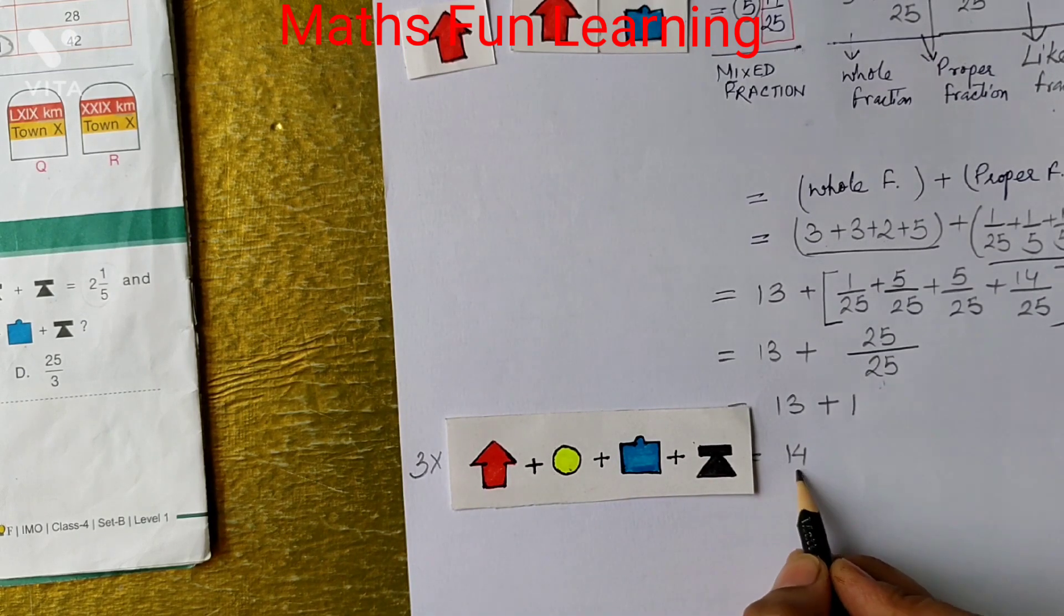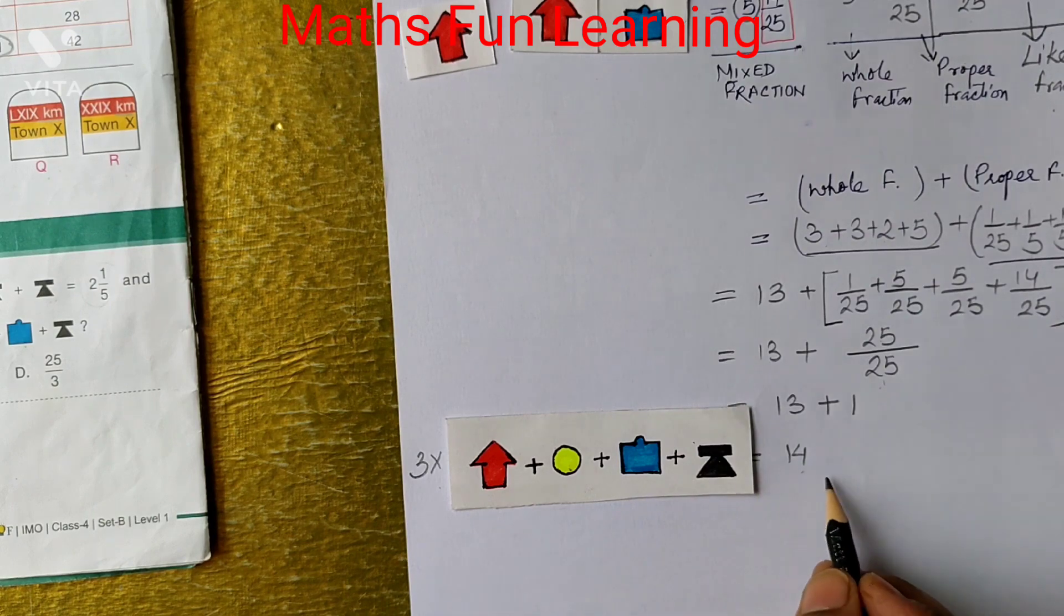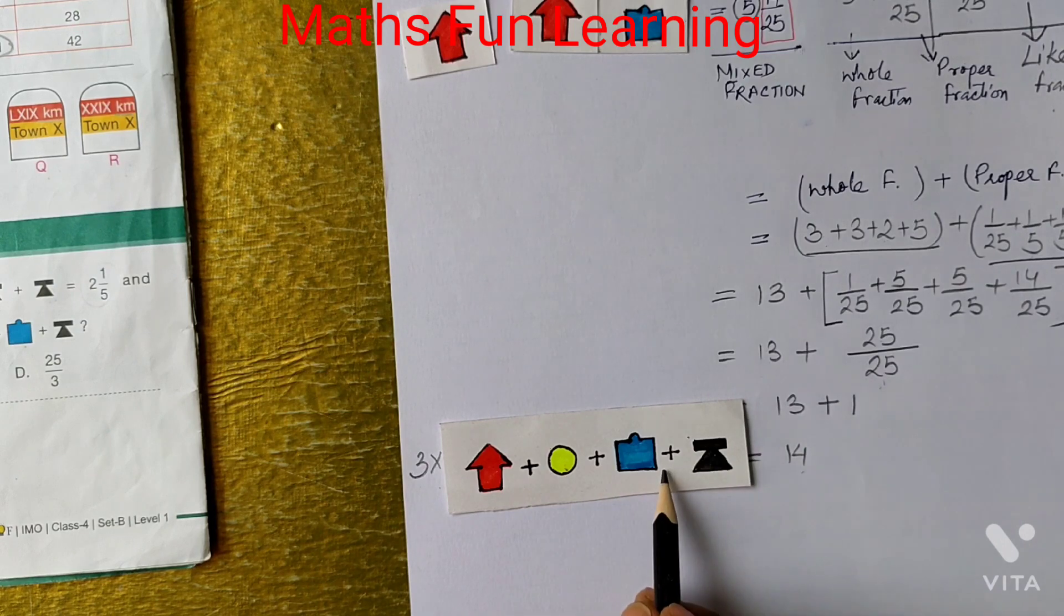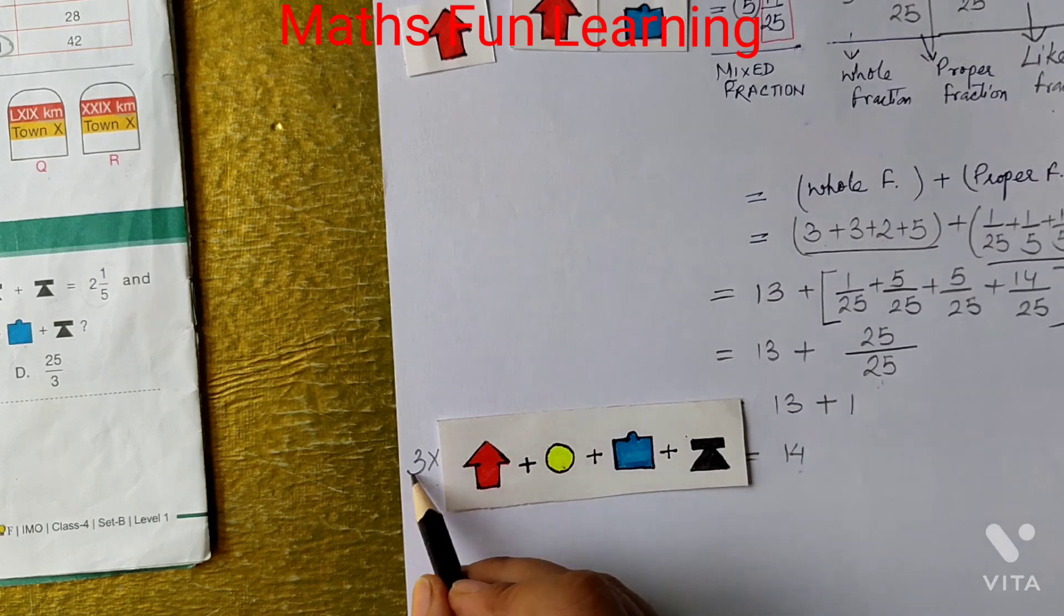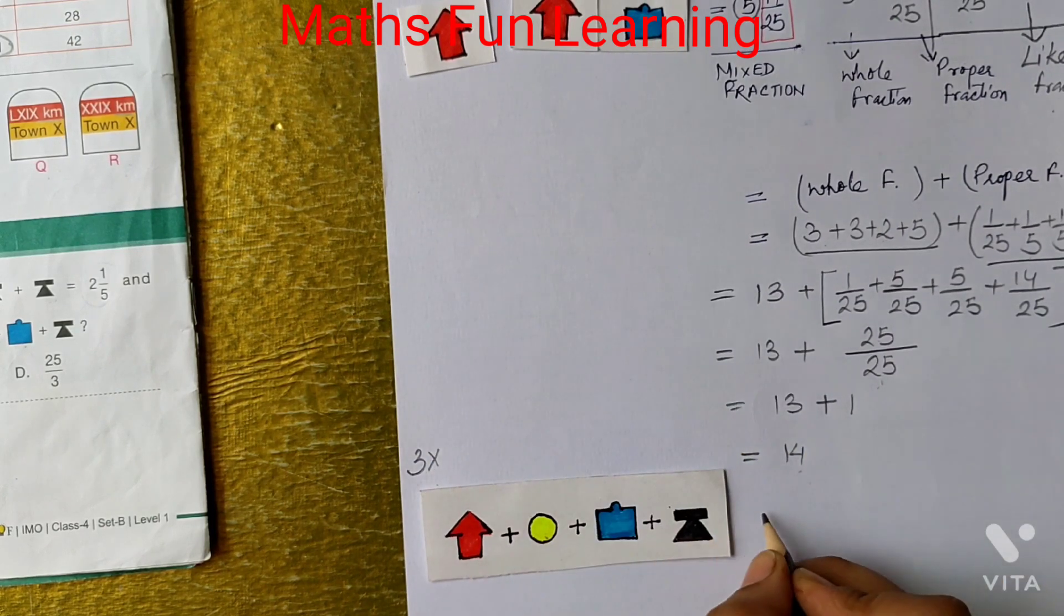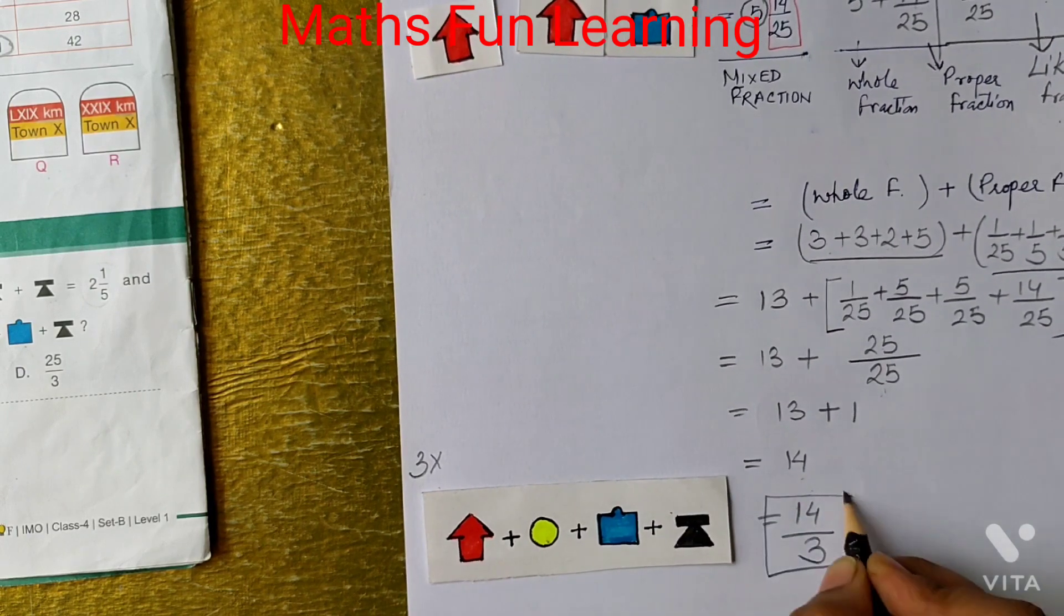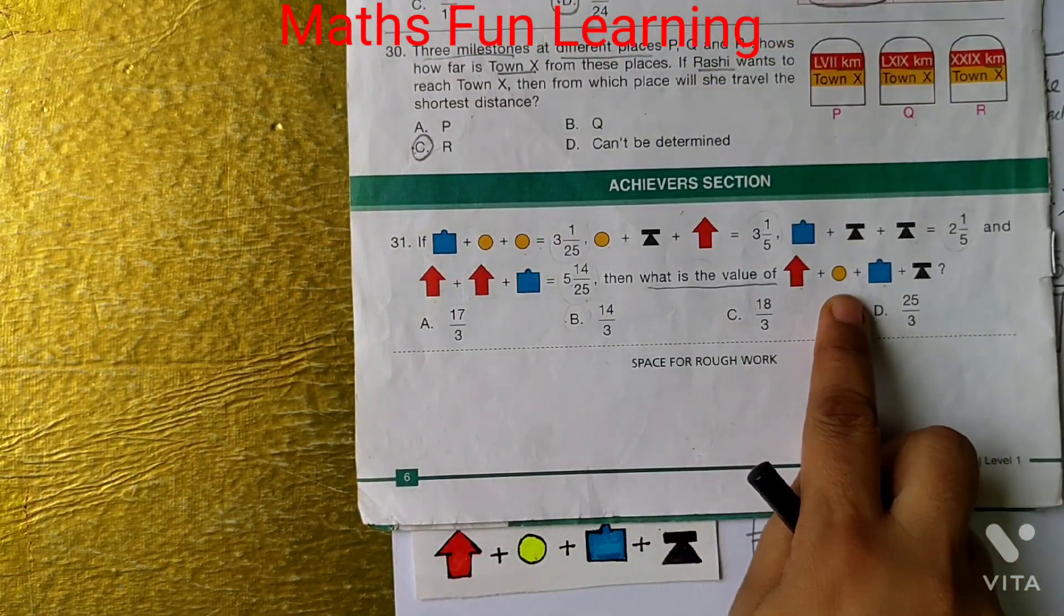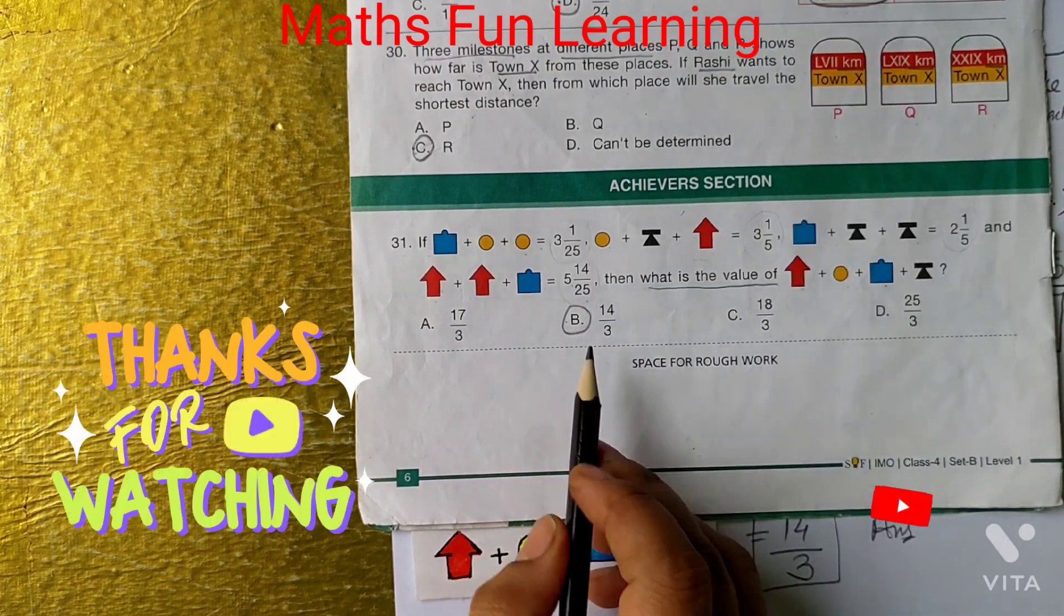That shapes, so answer which is 14, that is equal to 3 times the shape, but here the question asks you we have to find out only the one shape. So what we can do? 3 is multiplying, so the 3 will come here and it starts dividing. So this is equal to 14 upon 3, and that is your answer of this question. Where is the answer? You can see the B part is the correct answer.